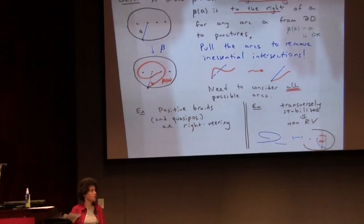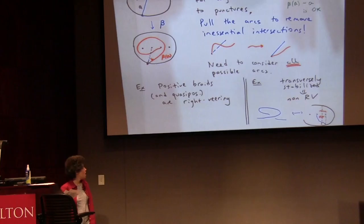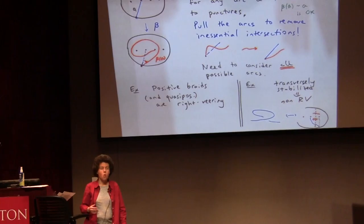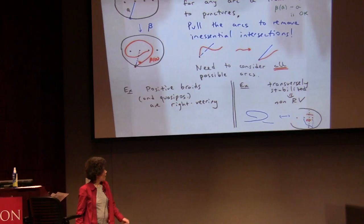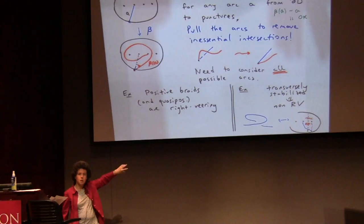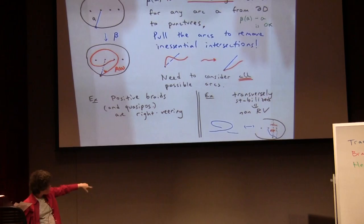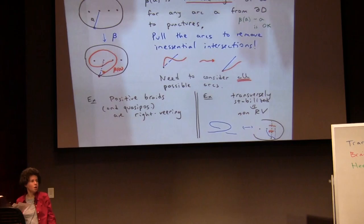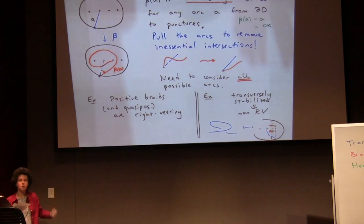Examples: if you compose your braid out of positive half-twists in the disc, it's definitely right-veering. In particular, all positive braids, all quasi-positive braids, are right-veering. For something non-right-veering: the transverse stabilization — the negative Markov stabilization braid — adds an extra strand and an extra point in the punctured disc with a negative, left-handed half twist. So the last arc gets twisted to the left, making it non-right-veering.